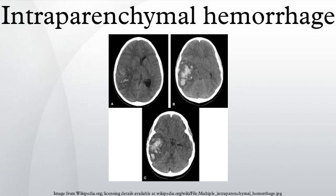Acute intraparenchymal hemorrhage – Clinical history: an 81-year-old diabetic male presents with a change in mental status. Findings: Axial CT images through the brain demonstrate two areas of hyperdensity, one measuring approximately 2 x 1.5 cm and a second measuring approximately 3 x 4 cm. There is surrounding edema with mass effect upon the left ventricle, and extension into the ventricular system.